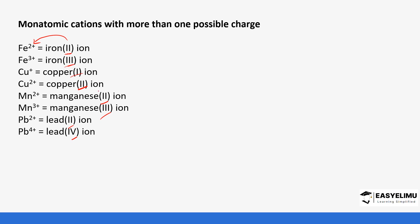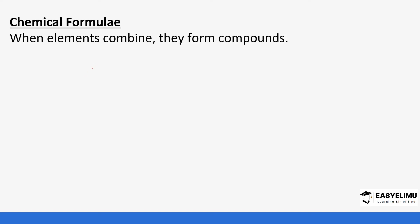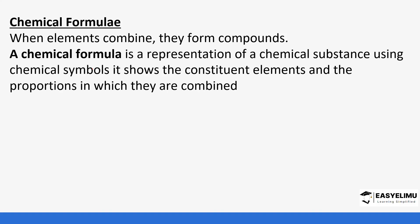We have seen how to name monoatomic cations - those with only one possible charge, anions, and cations with more than one possible charge. Now we get to forming compounds. A chemical formula is a representation of a compound or chemical substance using chemical symbols. It shows the constituent elements in the chemical compound and the proportions or amounts in their specific combinations.